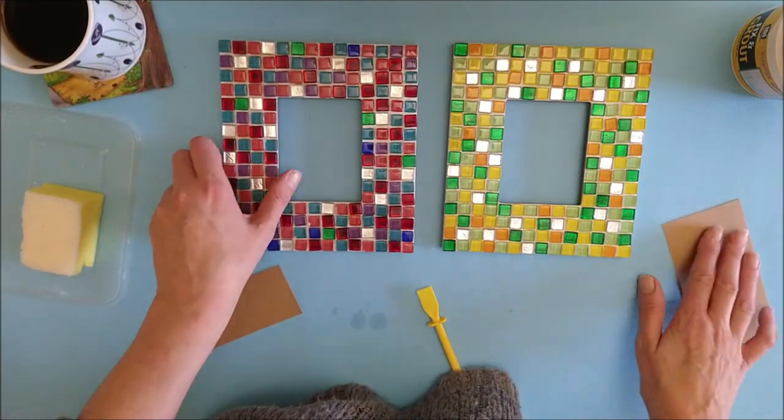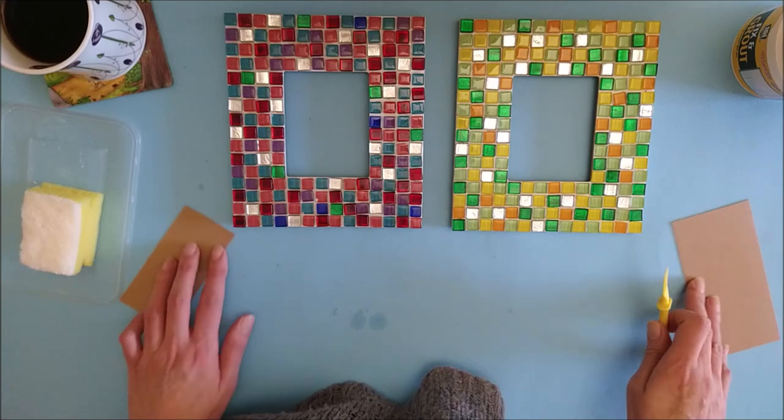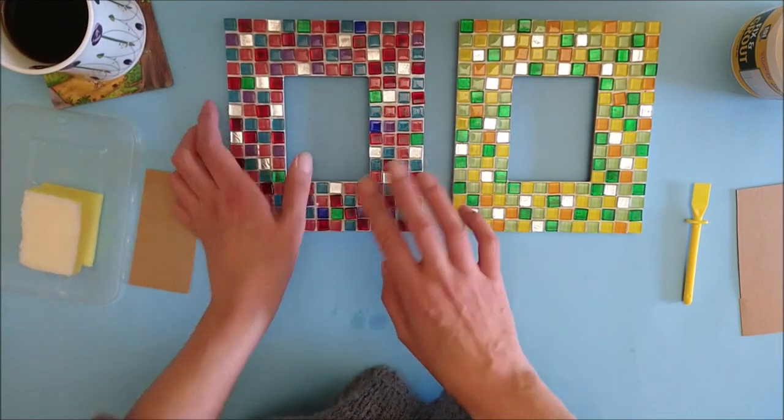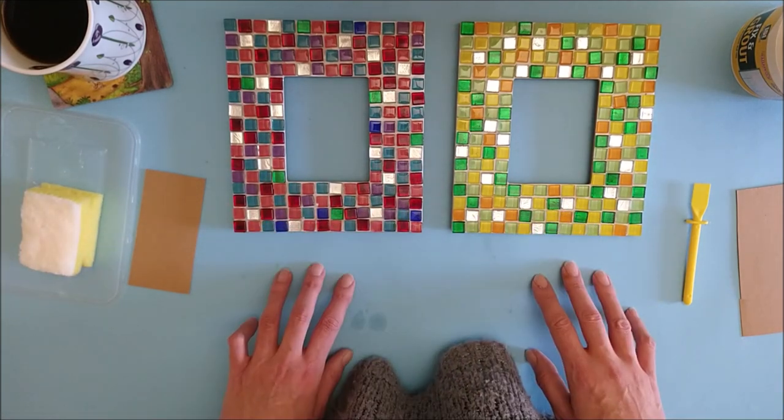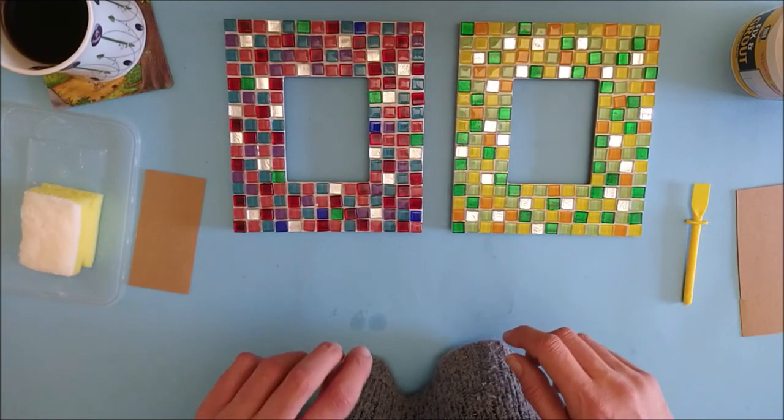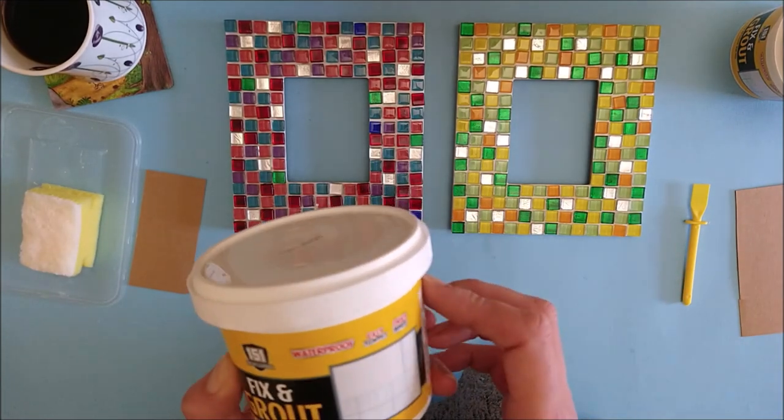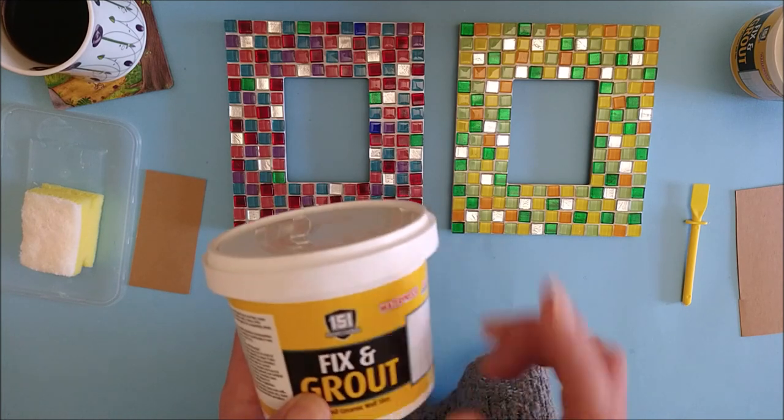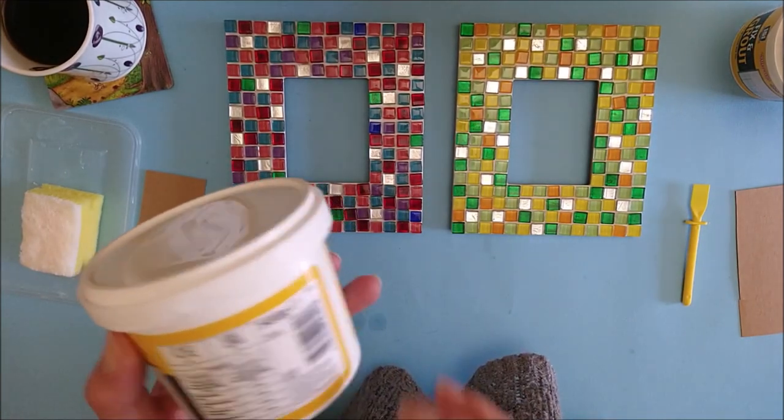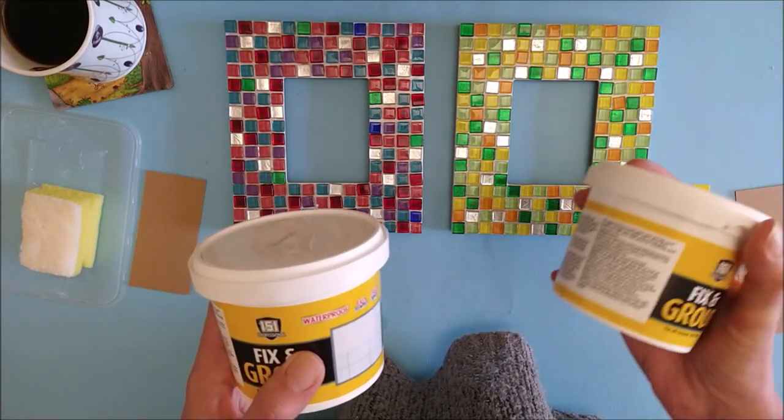These are both dry, and all that's left now is to do the grouting. When I made the mosaic pot stand, I really didn't enjoy mixing up the grout and didn't know what I was doing, so I thought it would be easier to use some ready-mix grout. This grout cost two pounds and is a 500 gram pot. I wasn't sure whether one would be enough to do both frames, so I did get two. I'm not holding out that this is really good quality as it came from Poundland, so we shall see.